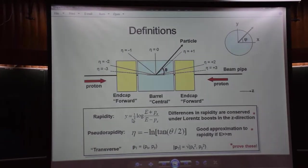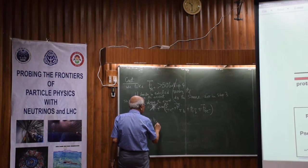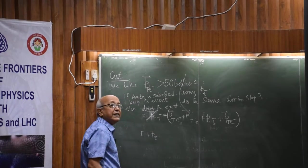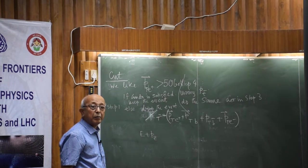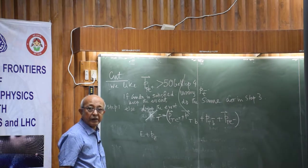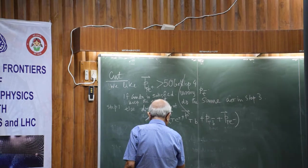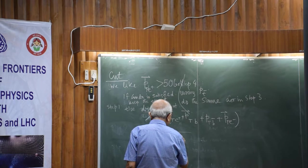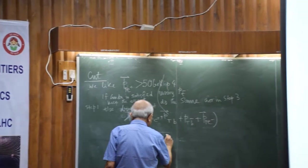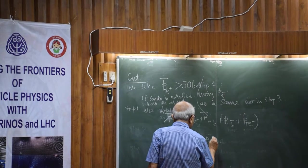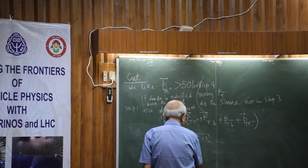But if I write it slightly in a different manner, then you will find that E plus pz is the same. Now, what is E? E is the energy of the particle, right? Energy of the particle. Therefore, this E will be, mass I do not write, pt square plus pz square, right?